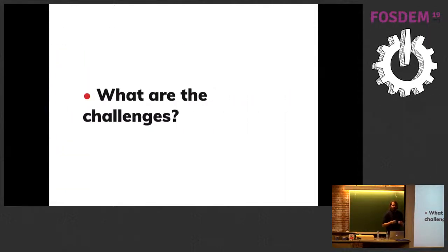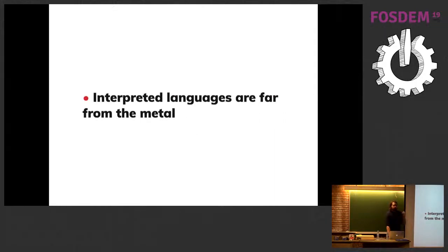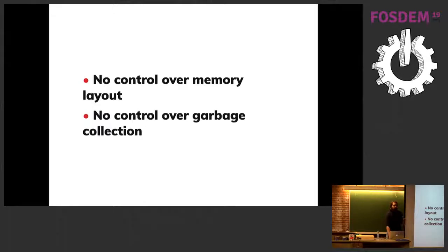What are the challenges when implementing data structures in JavaScript? You could implement them the old way like in C or C++, but in JavaScript there are traps and pitfalls. First, JavaScript is interpreted, not compiled — we are far from the metal. We have no control over the memory layout, and no real control over garbage collection, which cleans unused memory automatically. Trying to work around garbage collection can slow down your code.